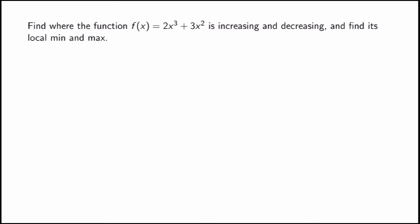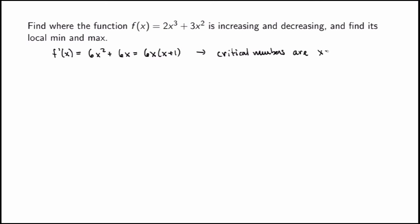The domain is all real numbers since it's a polynomial. We calculate the derivative to get the critical numbers: f prime = 6x² + 6x = 6x(x + 1). The two critical numbers — zeros of the derivative — are x = 0 and x = −1.